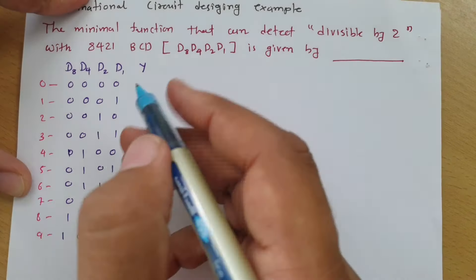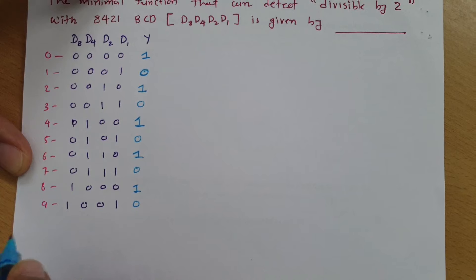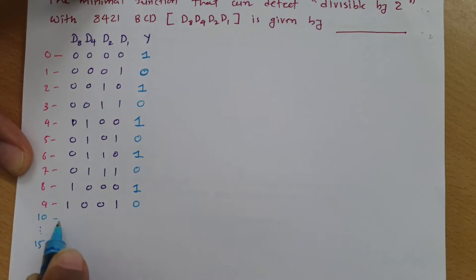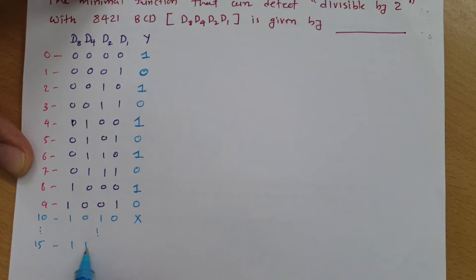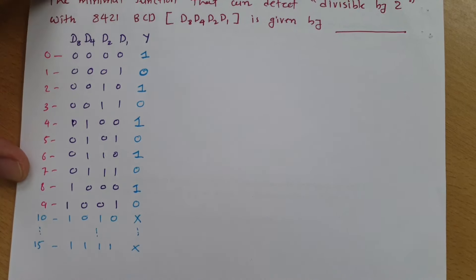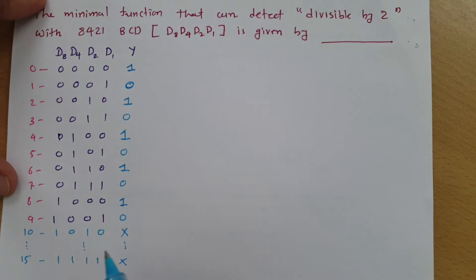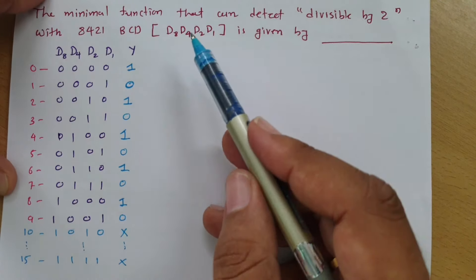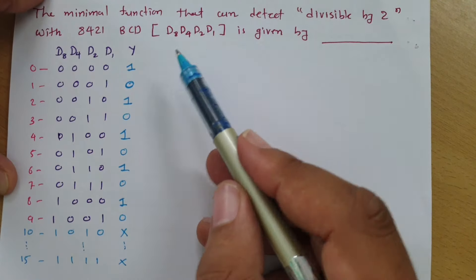For other locations — from 10 to 15, for example 10 is 1010 — BCD code is not defined, so we can say don't care. From 1010 to 1111, the output will be don't care. Our agenda is now to design the function y as a combinational circuit.